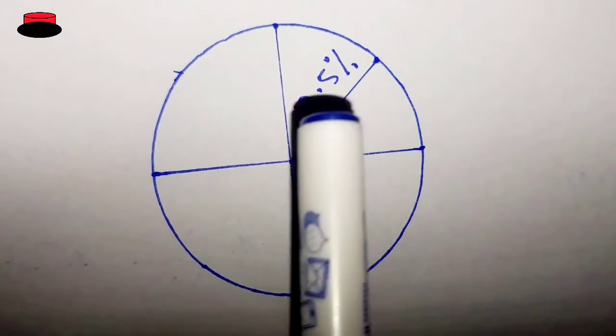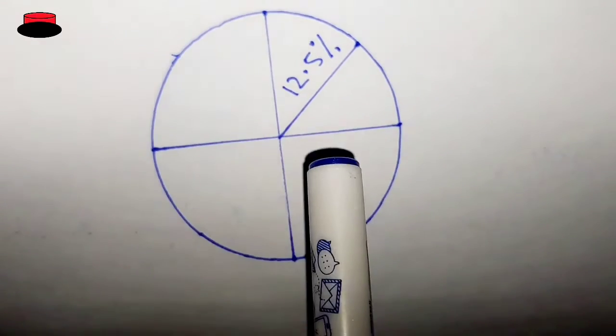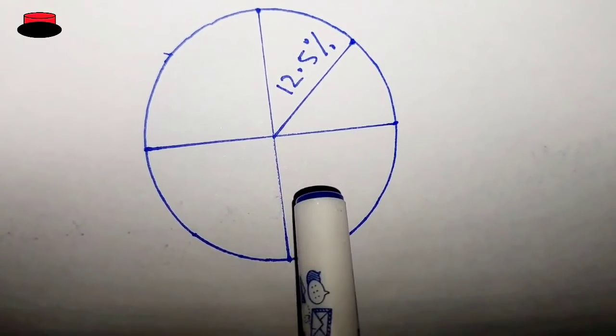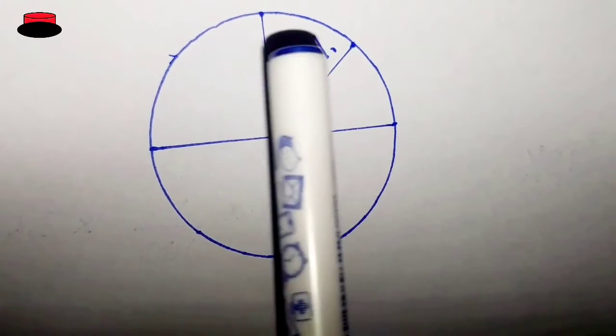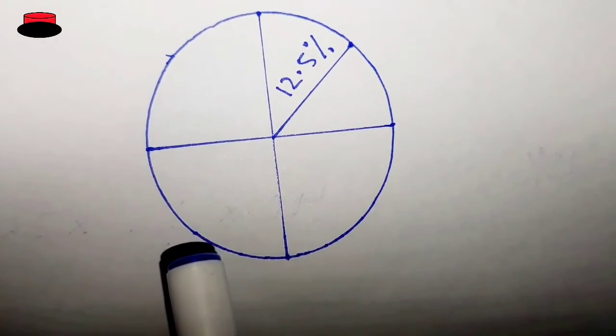So let's suppose this is the circle and one quadrant is equal to 90 degrees. So 90, 90, 90, 90. It will be 360 degrees in total.